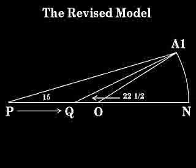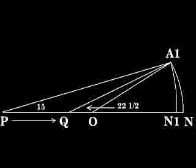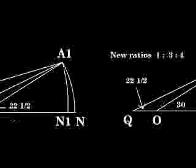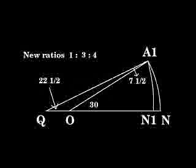The revised model. We move P to Q so that the angle A1QN is equal to 22 and a half degrees. Next, draw the arc A1N1 with radius QA1 is equal to QN1. Angle QA1O is 7 and a half degrees. Angle A1QN is 22 and a half degrees. Angle A1ON is 30 degrees. The new ratio is 1 to 3 to 4.